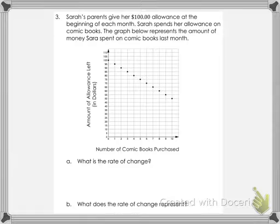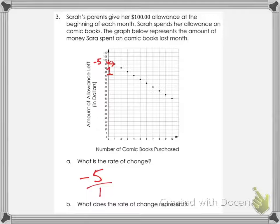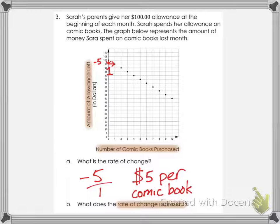Number three: Sarah's parents give her $100 allowance at the beginning of each month. Sarah spends her allowance on comic books. The graph represents the amount of money Sarah spent on comic books last month. Question A: what is the rate of change? Taking the two top dots, it goes from 100 down to 95 — a rise of negative 5. From 0 to 1 on the x-axis is a run of 1. So the rate of change is negative 5 over 1. Part B: what does the rate of change represent? She is spending $5 per comic book.